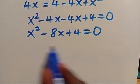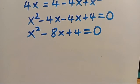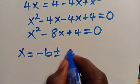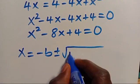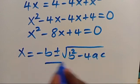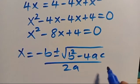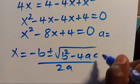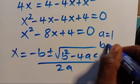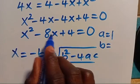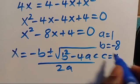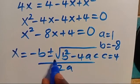So when we apply the quadratic formula, we are going to have X equals negative B, plus or minus root of B squared minus 4AC, divided by 2A. Here parameter A is the coefficient of X squared, which is 1; parameter B is the coefficient of X, which is negative 8; and C equals 4.